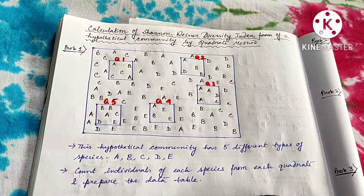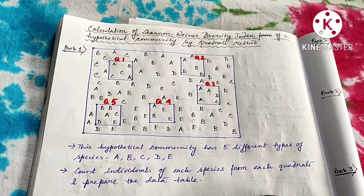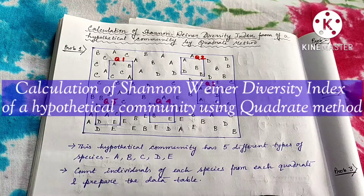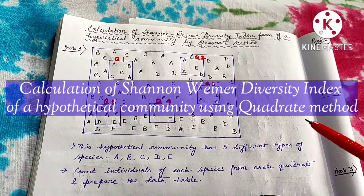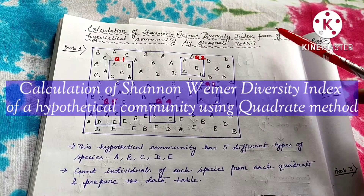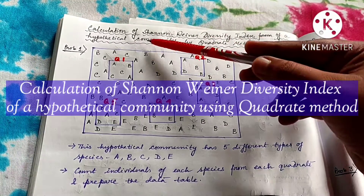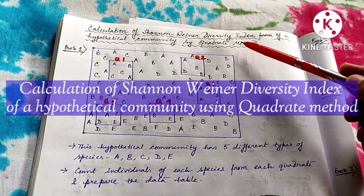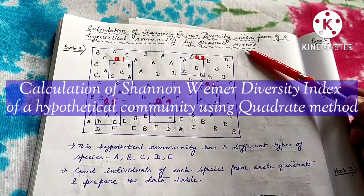Welcome friends, myself Shaptapurani from Biolive. Hope all of you are doing very well. Today I will teach you a simple method to calculate the Shannon-Wiener diversity index for a hypothetical community by the quadrat method.